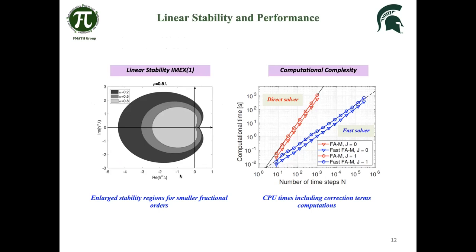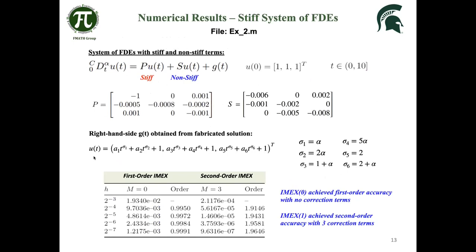I'll very quickly wrap up the results. Here we show the stability regions for the second order IMEX scheme. The stability is maintained for a range of fractional orders. We show the linear complexity for the fast solver. We have a few numerical examples that can be reproduced from the repository. We have a stiff system of equations where we are able to recover the first and second order convergence of the IMEX schemes. We have theorems in our work that these numerical results support.